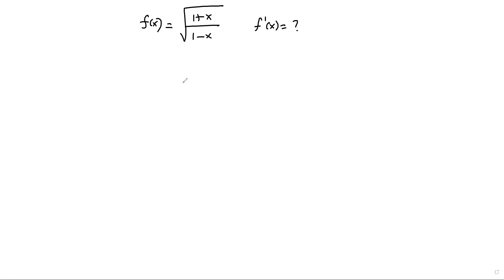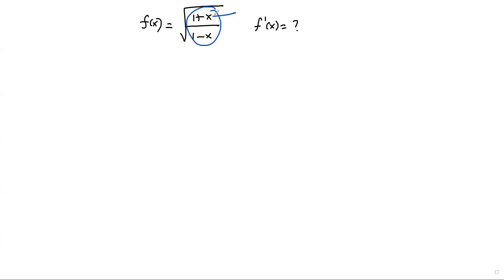f of x is equal to square root of (1+x) over (1-x), and we have to find f prime of x — that is, we have to find the derivative of this function with respect to x. If I find the derivative as it is, I have to use the chain rule for the square root, then the quotient rule inside, which seems to take a lot of work.